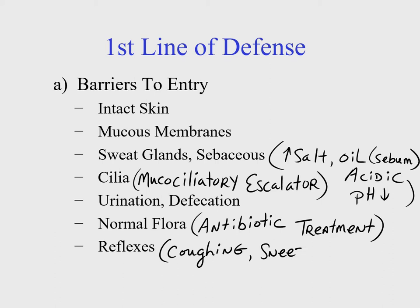Coughing helps expel excess mucus and unwanted organisms from the lower respiratory tract. Sneezing is another quick reflex used to expel a foreign object or unwanted organism. Likewise, vomiting can result when food contains a pathogen or source of food poisoning, and the body rejects it either through vomiting or diarrhea. Blinking is another reflex. These are some obvious mechanisms that help keep out foreign organisms or pathogens.